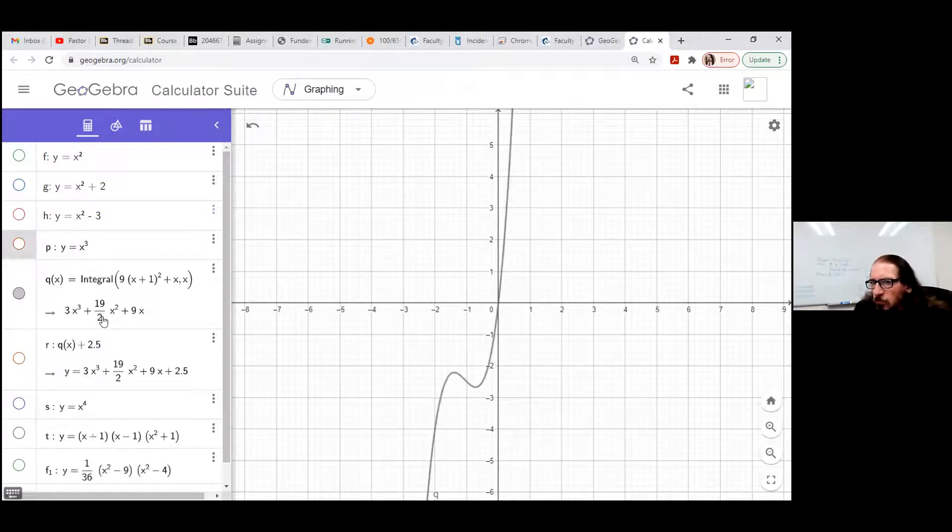Here's another cubic function, y equals 3x cubed plus 19 halves x squared plus 9x. Well, that has one x-intercept still. But if you follow where I'm moving the cursor here, here it switches from increasing to decreasing, and then very shortly after, relatively speaking, from decreasing to increasing. So now we're seeing two turns.